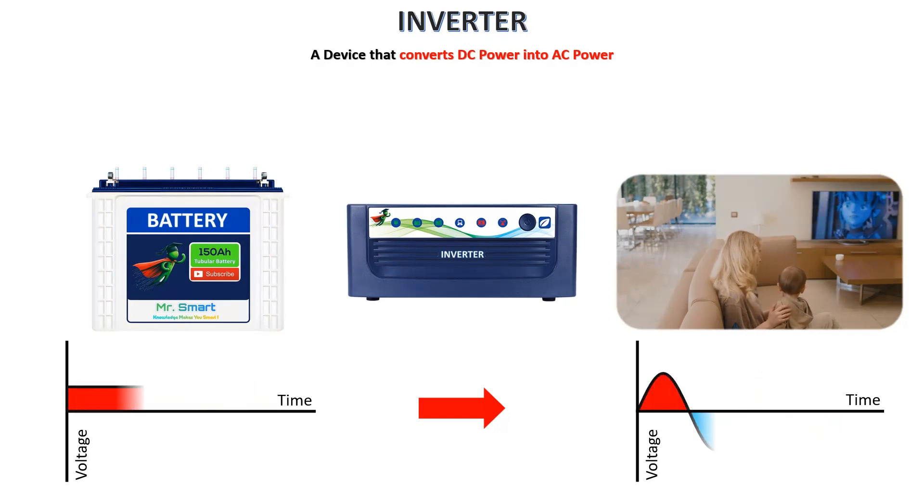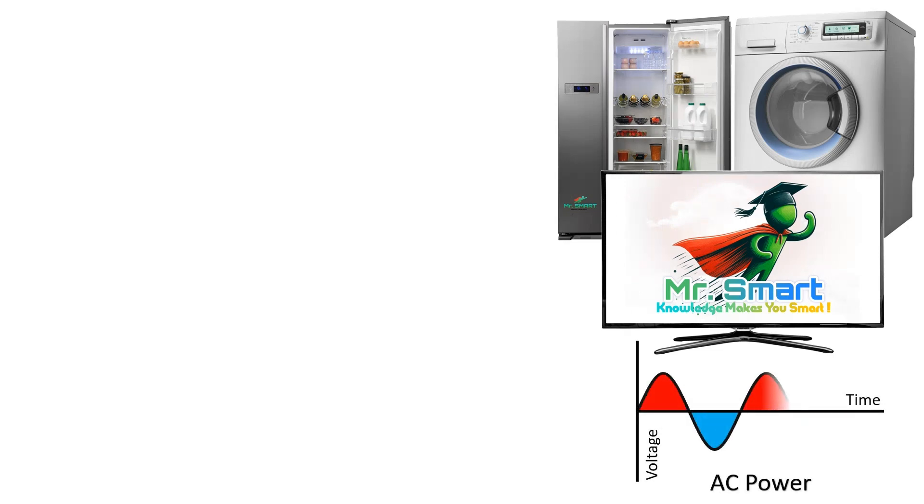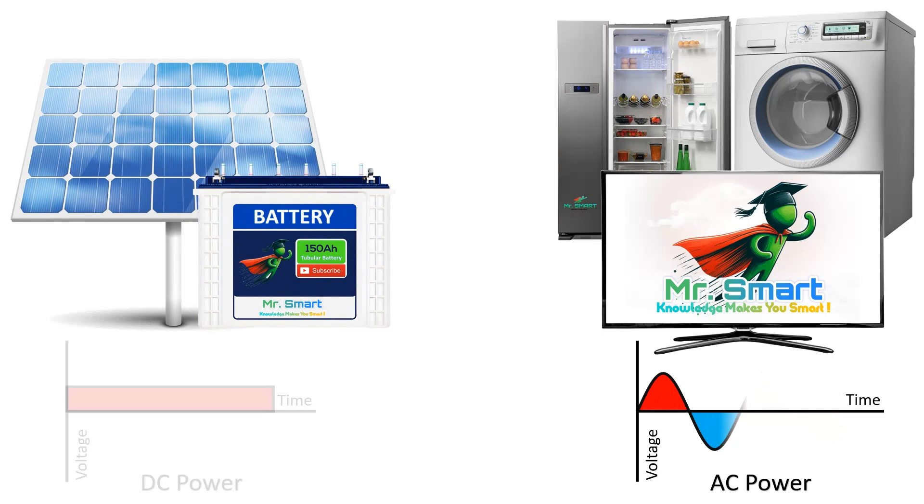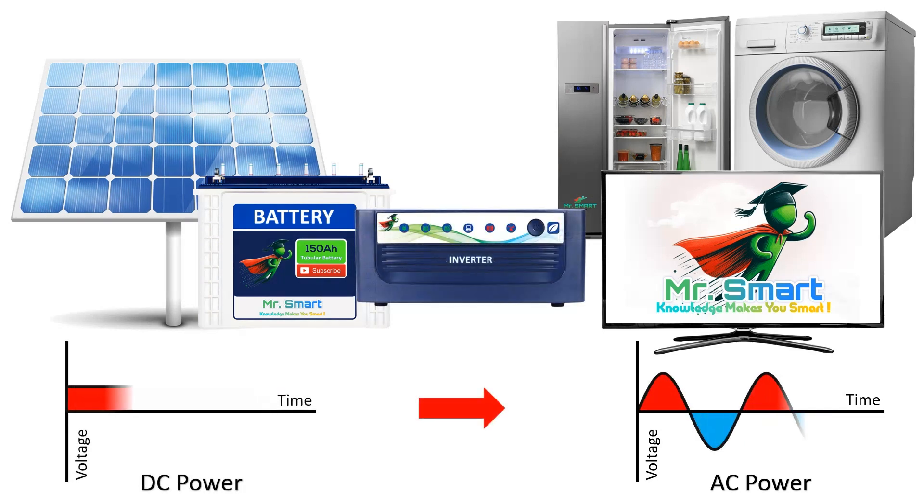Now you might ask, why do we even need this conversion? Well, appliances like your fridge, TV, and washing machine are all designed to work with AC power. But batteries and solar panels give us DC power. So, the inverter is like the middleman that makes everything compatible.